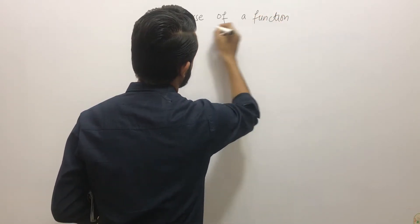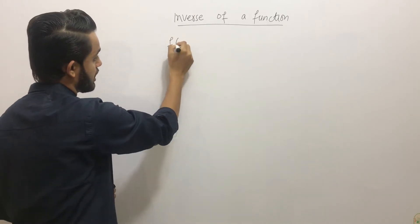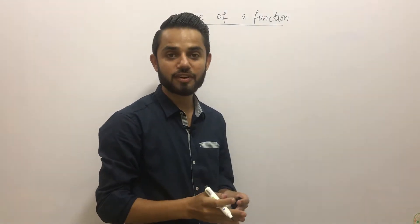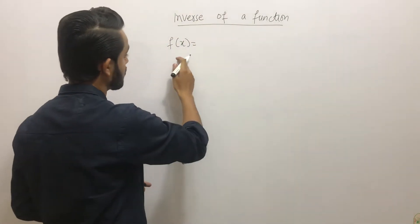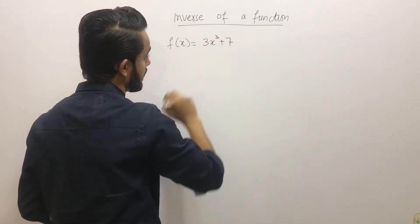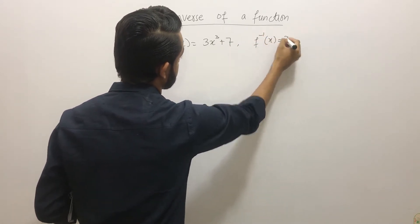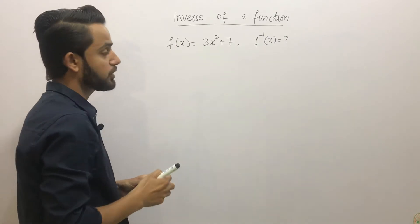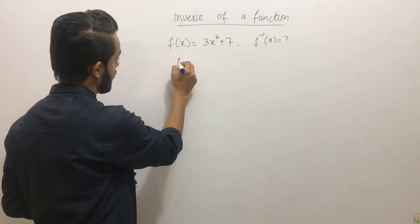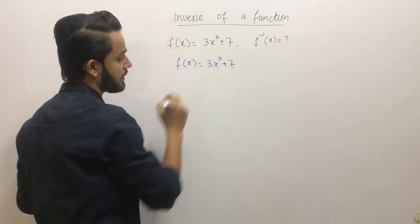Let's assume we have a function f(x) = 3x³ + 7 and we want to find its inverse. There are four steps, so let's go through them one by one.